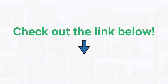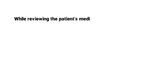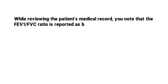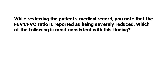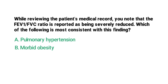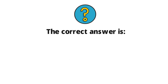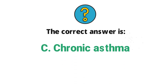Now let's get into the practice question. While reviewing the patient's medical record, you note that the FEV1 to FVC ratio is reported as being severely reduced. Which of the following is most consistent with this finding? A. Pulmonary hypertension, B. Morbid obesity, C. Chronic asthma, D. Pneumonia. The correct answer is C, chronic asthma.